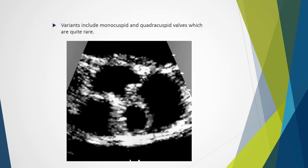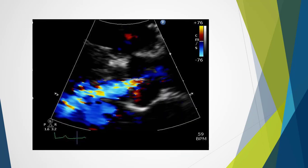Variants include monocuspid and quadricuspid valves, which are relatively rare. In this example of a monocuspid valve, the only actual orifice is visible and everything else is fused. In this instance it all looks fairly benign except for a reasonable amount of aortic regurgitation moving down to the ventricle.